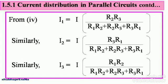From equation 4, we can get the individual currents as follows: I1 is equal to I into R2 R3 divided by R1 R2 plus R2 R3 plus R3 R1. Similarly, I2 is equal to I into R3 R1 divided by R1 R2 plus R2 R3 plus R3 R1. Similarly, I3 is equal to I into R1 R2 divided by R1 R2 plus R2 R3 plus R3 R1.